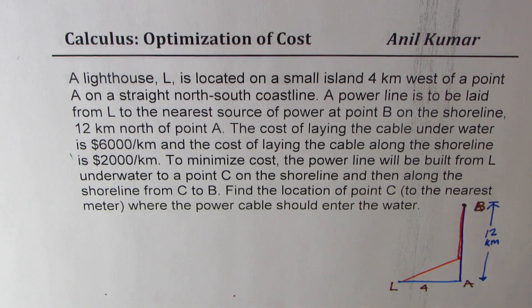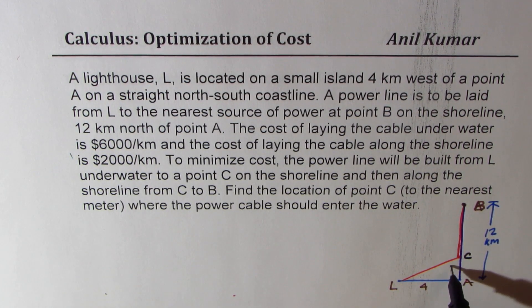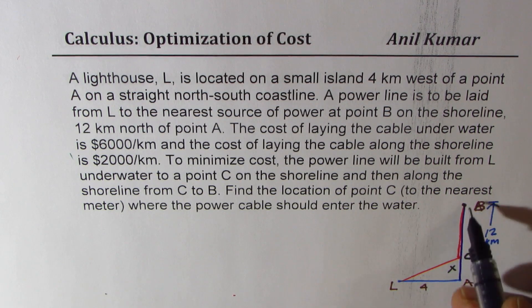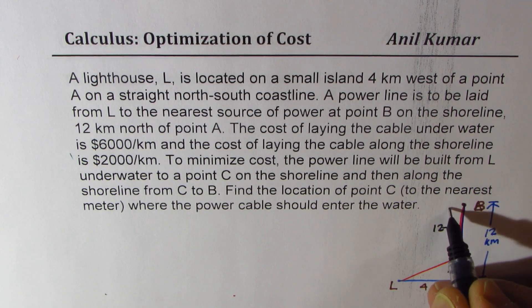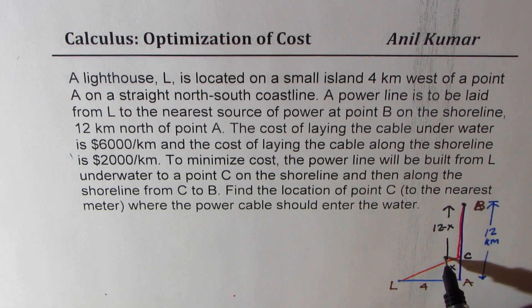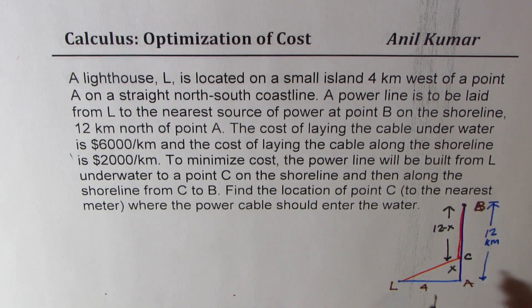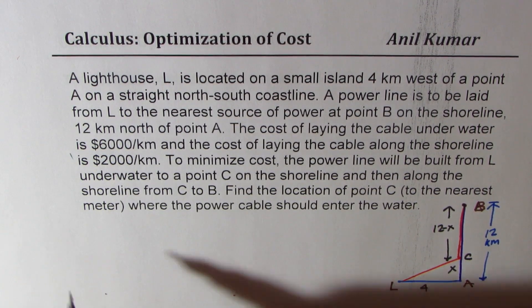If we see that the point C is x km from A, in that case B to C is going to be 12 minus x. So this distance is going to be 12 minus x. That actually gives you the cost.